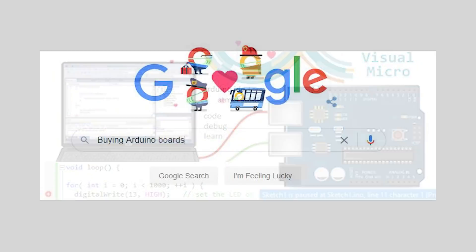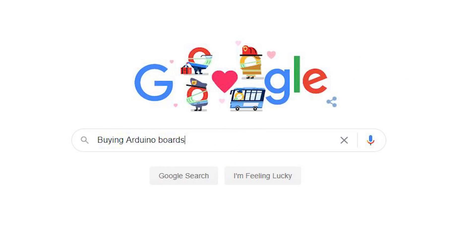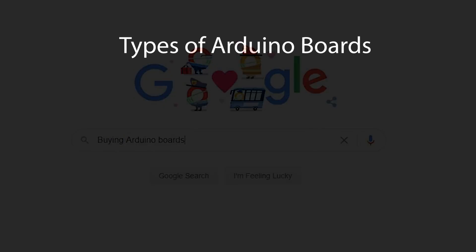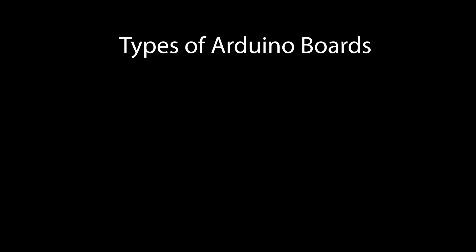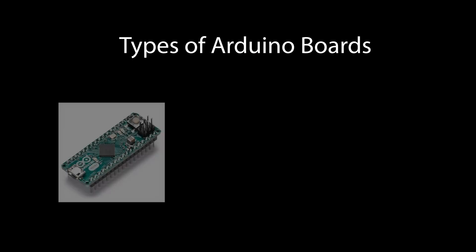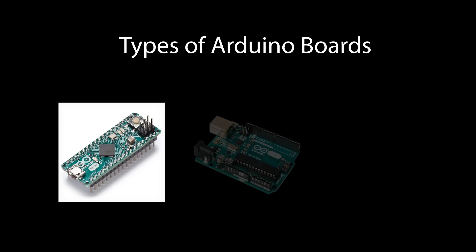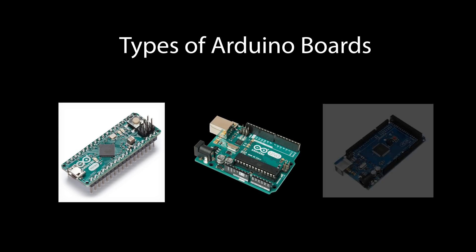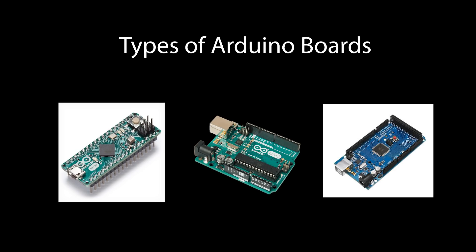If you're going to go online and buy yourself an Arduino board, you've probably noticed that there's quite a few available. There are three main types: the Micro, the Uno and the Mega 2560. All three of these different types of Arduino boards have their own level of processing power. The frequency or clock speed of these boards simply means how fast they can execute commands.